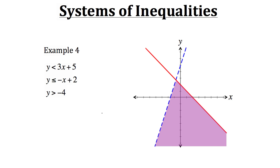We still need to graph our last inequality: y is greater than negative 4. When we graph that, we'll draw the line y equals negative 4 as a dashed line because the line itself is not part of the solution — there is no equal sign in this inequality. Since y is greater than negative 4, we shade the area above this line. Now we have all of our inequalities graphed.